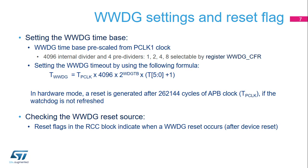The down-counter uses the APB1 clock divided by 4096, and again divided by a division ratio selected by the application. This division ratio can be 1, 2, 4, or 8, as defined in the WWDG CFR register. The formula shown in this slide lets you determine the watchdog timeout value.